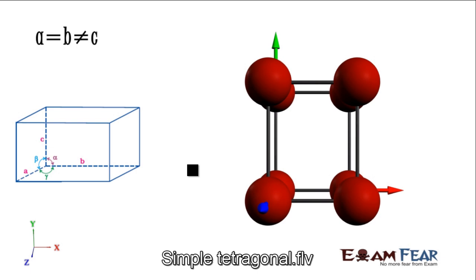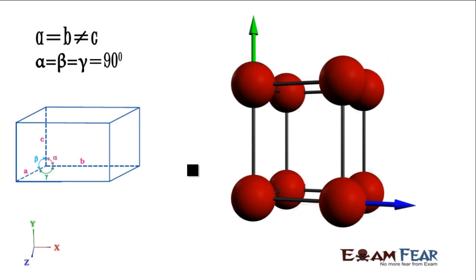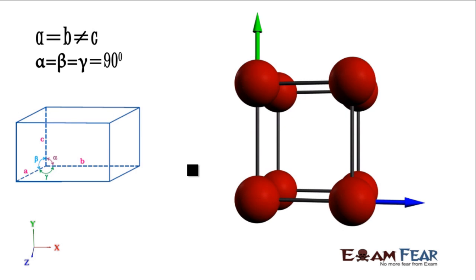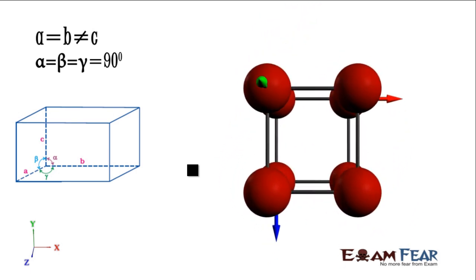The next is simple tetragonal. In this case, two sides are equal and the third side is not equal, but all the angles are equal at 90 degrees. In tetragonal packing, we have only two options: simple and body centered. In the simple packing, all the atoms are on the edges.